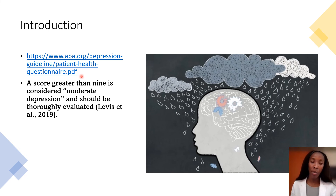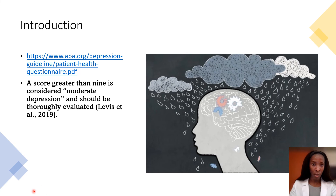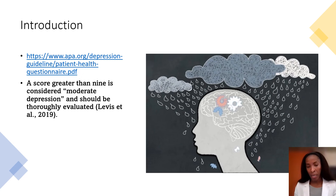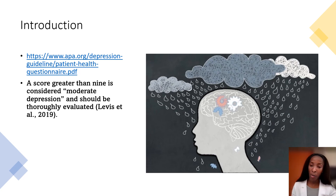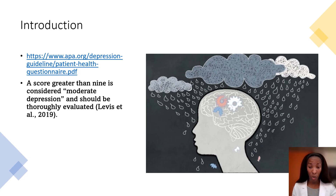A score greater than nine is considered moderate depression and should be thoroughly evaluated. At that point, the provider will ask you to explain what you mean by certain answers — for example, with trouble sleeping, they'd explore whether it's falling asleep or staying asleep and what's causing it. A score greater than nine is not a diagnosis — it's a screening tool that aids in diagnosis and determines what other interventions are necessary.